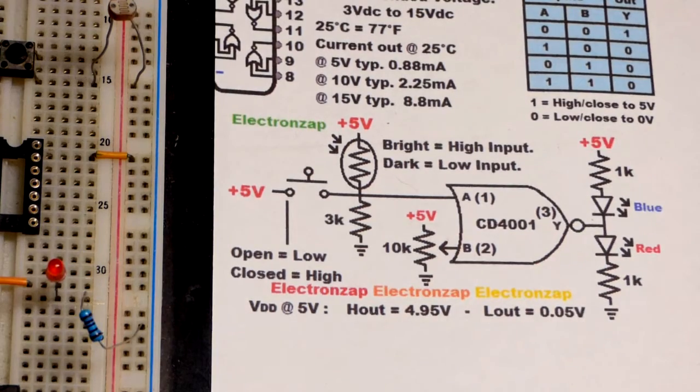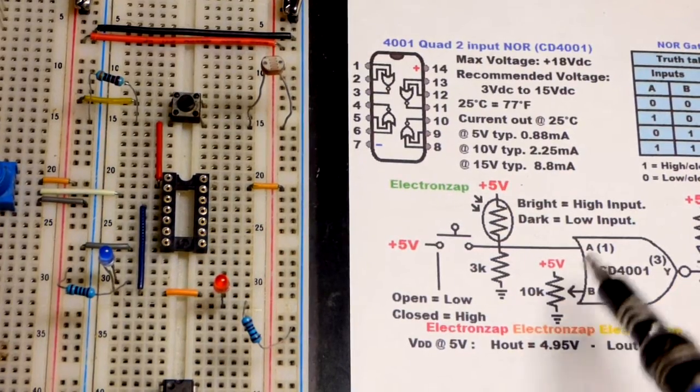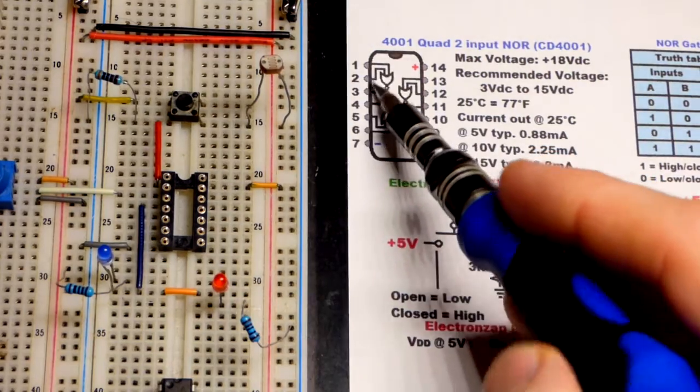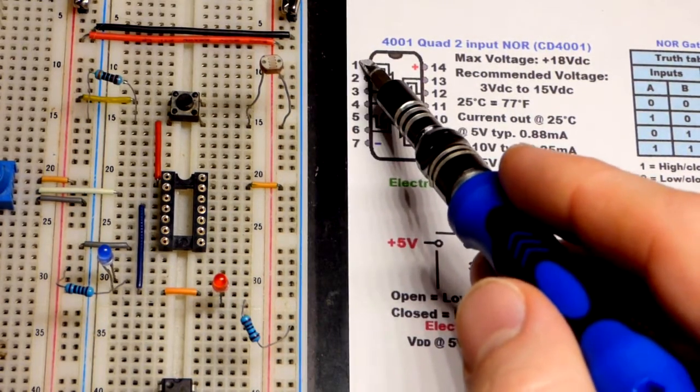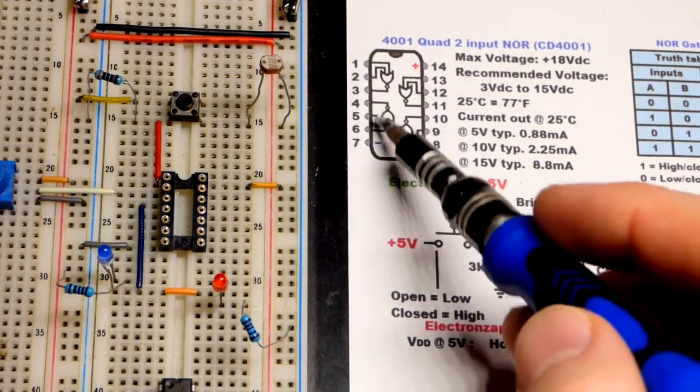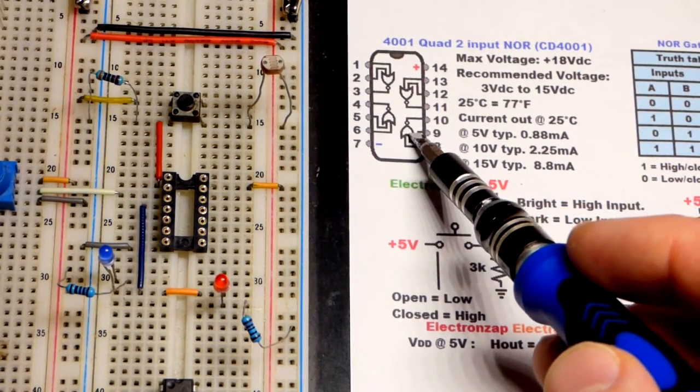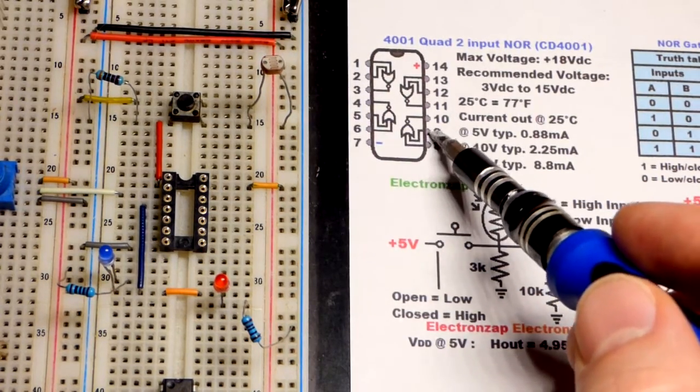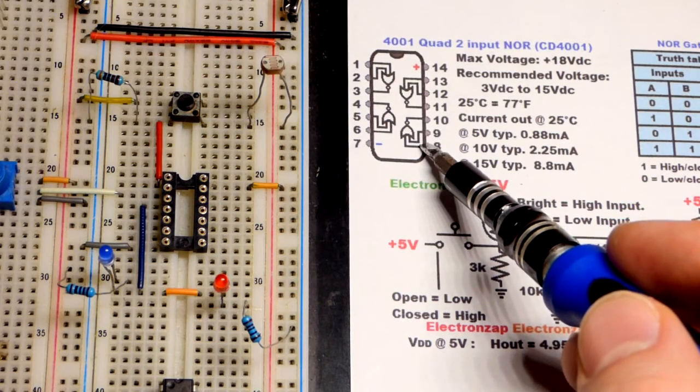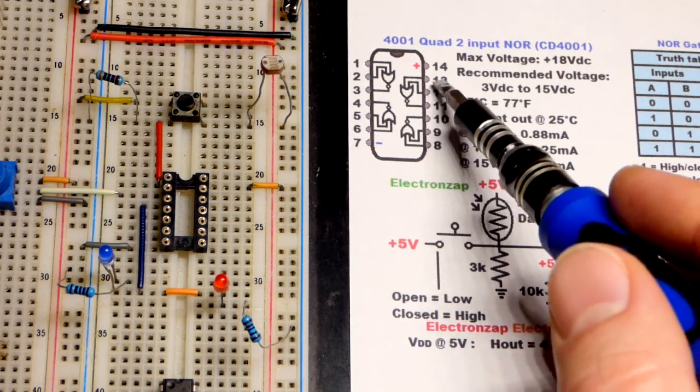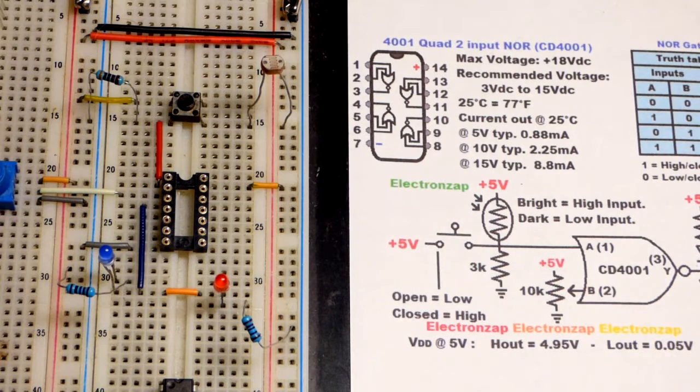We're going to use this top left NOR gate - pins 1, 2, and 3. These other NOR logic gates we're just going to leave floating. When I looked at the datasheet, I didn't see that you should give the inputs a voltage, though many ICs recommend giving them a solid voltage.